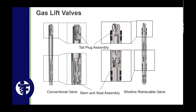Both conventional and wireline valve assemblies have a tail plug assembly with a trainer valve where you add or remove pressure to set the valve to whatever set pressure the design calls for. The bellows, stem, and seat control or regulate gas flow. You pick your stem and seat assembly based on expected gas volumes — high gas volumes require a larger stem and seat, lower gas volumes a smaller one.